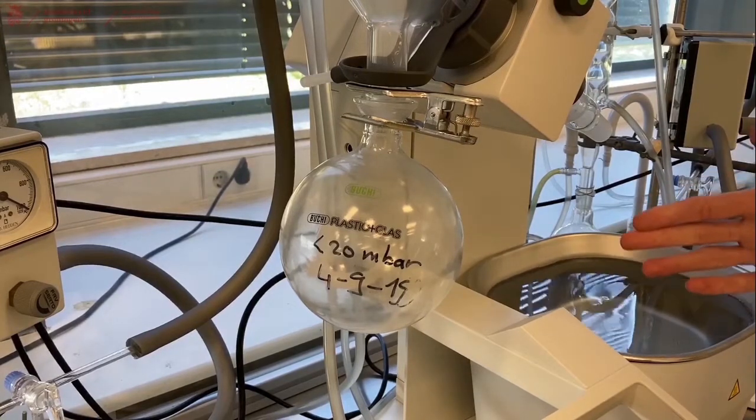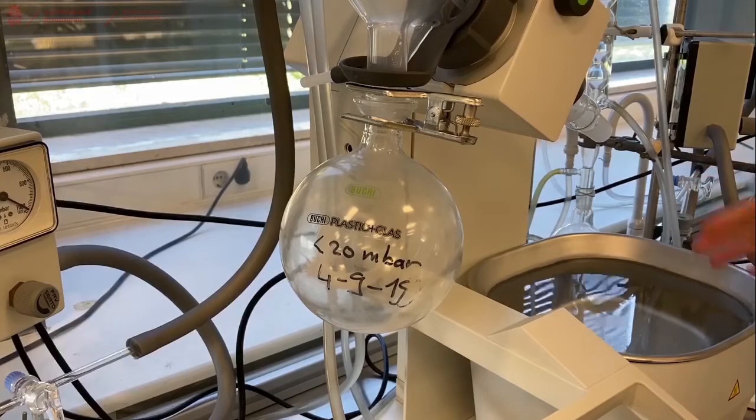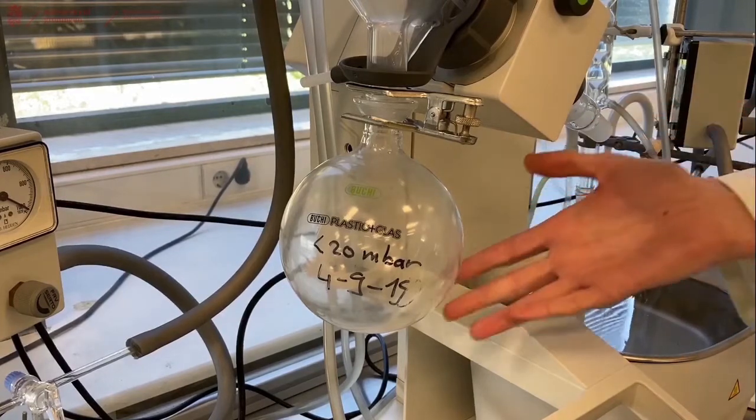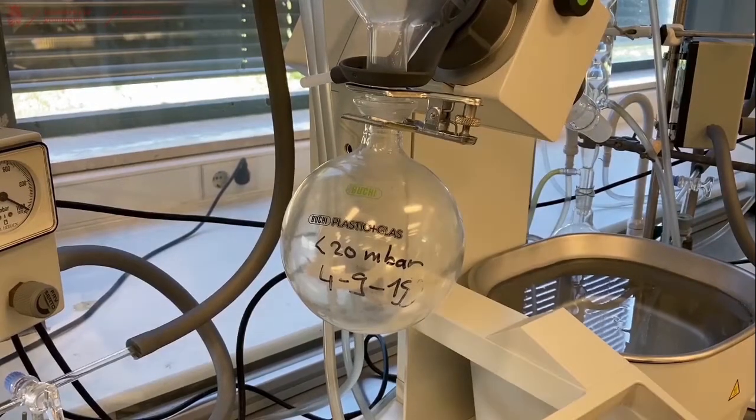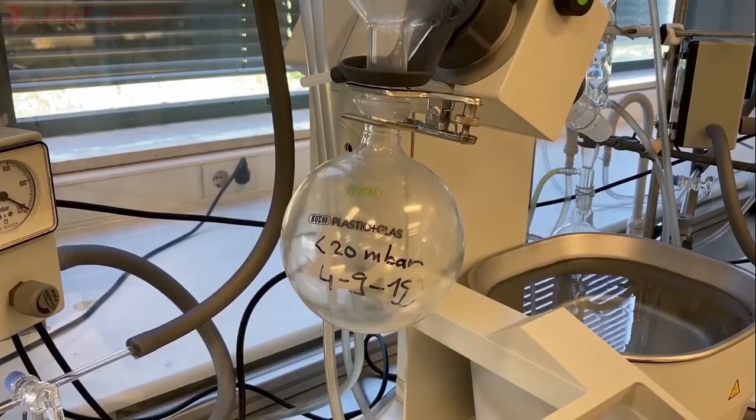Make sure that when you're done with the Rotary Evaporator, that everything is back to its original position. The flask is empty. Everything is dry. And that the next user can use it. This is how you operate a Rotary Evaporator.